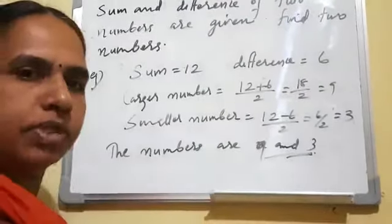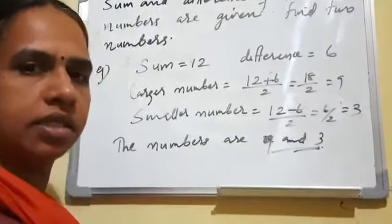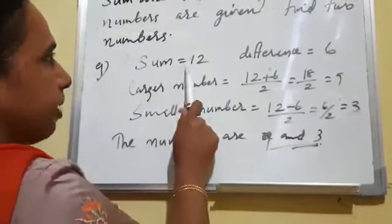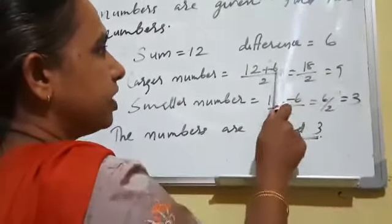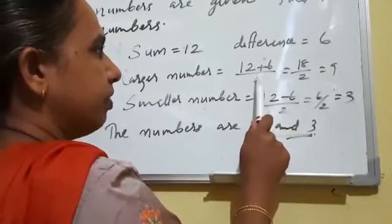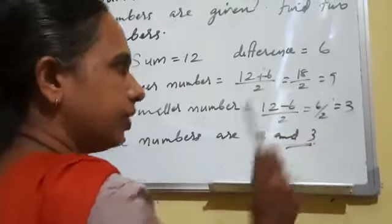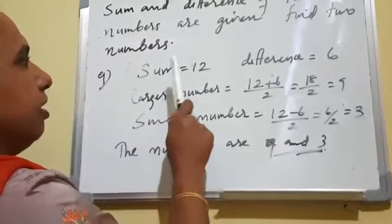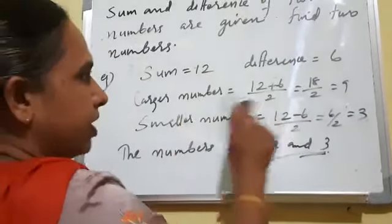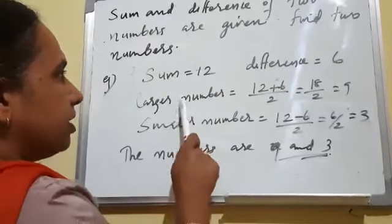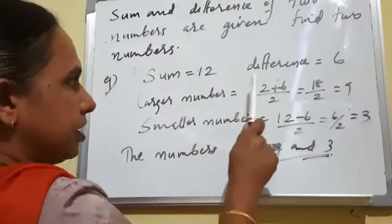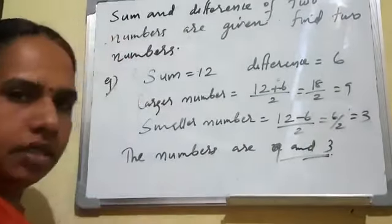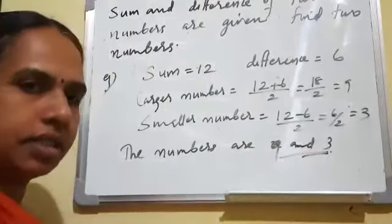When you take two numbers, one is large and the other is small. You can find the larger number using the formula: sum plus difference divided by 2. Here, 12 plus 6 divided by 2 equals 18 divided by 2, which equals 9. So the larger number is 9.